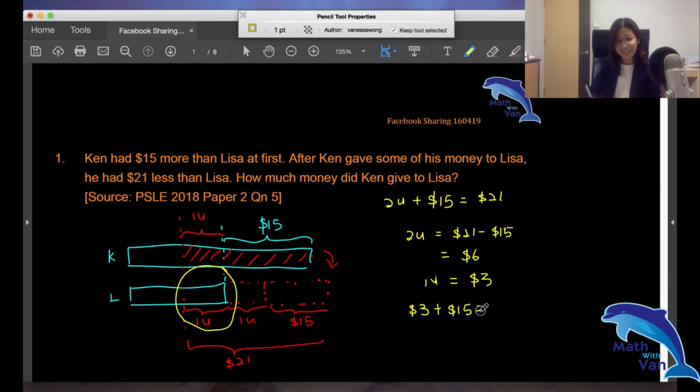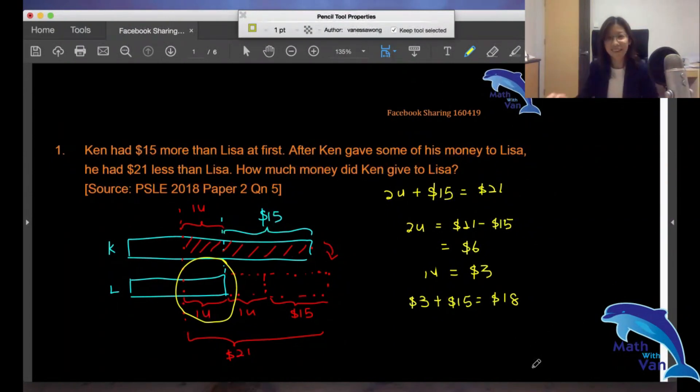Students, did you get your answer right? Later I'll give you some questions to practice, and I'll see how I can give you worksheets in advance. How much money did Ken give to Lisa? $18. How many of you got it right? Okay, can we move on?